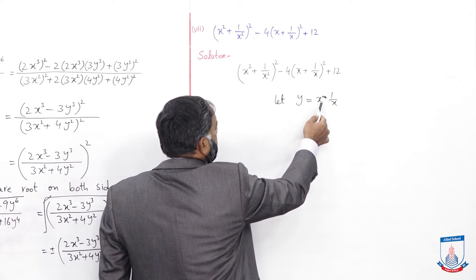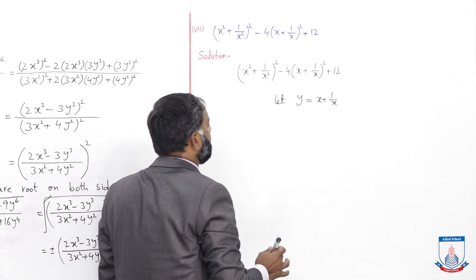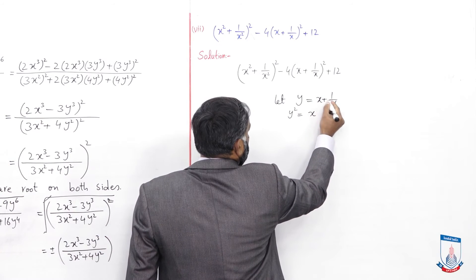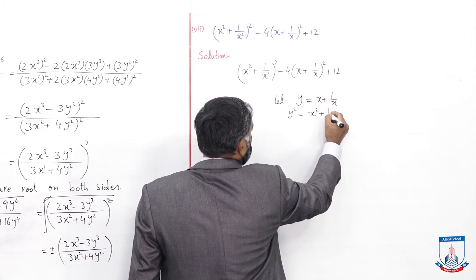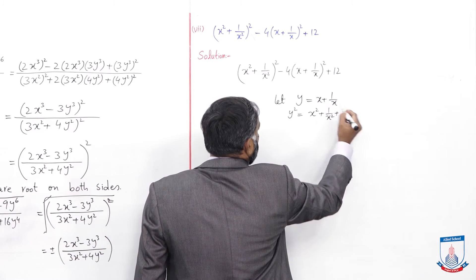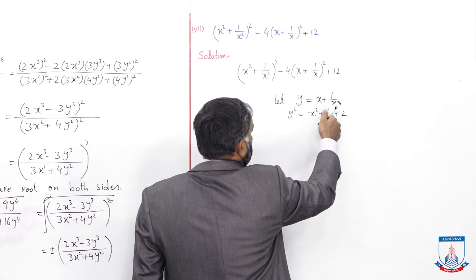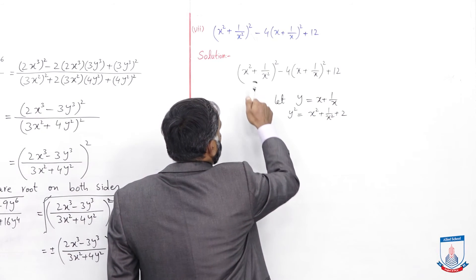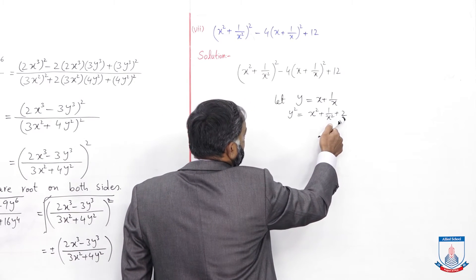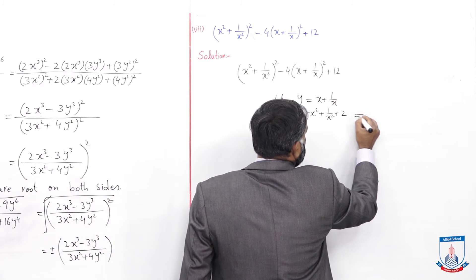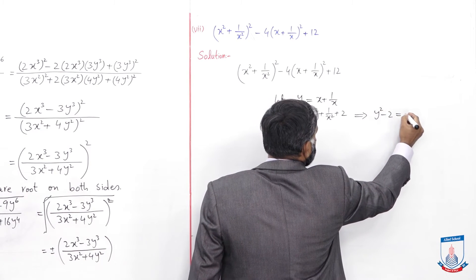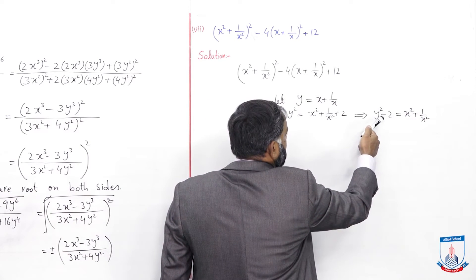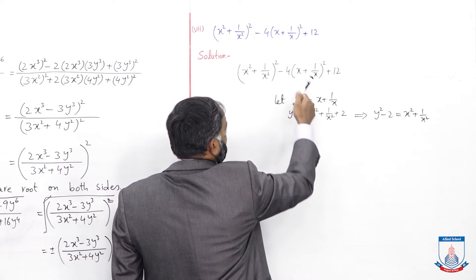Both sides पे square लेते हैं। y² = (a+b)² formula से: a²+b²+2ab — तो 2 आ जाएगा क्योंकि a=x और b=1/x है, x और x से cancel हो जाएगा। अब x²+1/x² की value चाहिए तो: plus 2 left side पे आएगा, minus 2 हो जाएगा। तो x²+1/x² की value y²-2 आ गई।